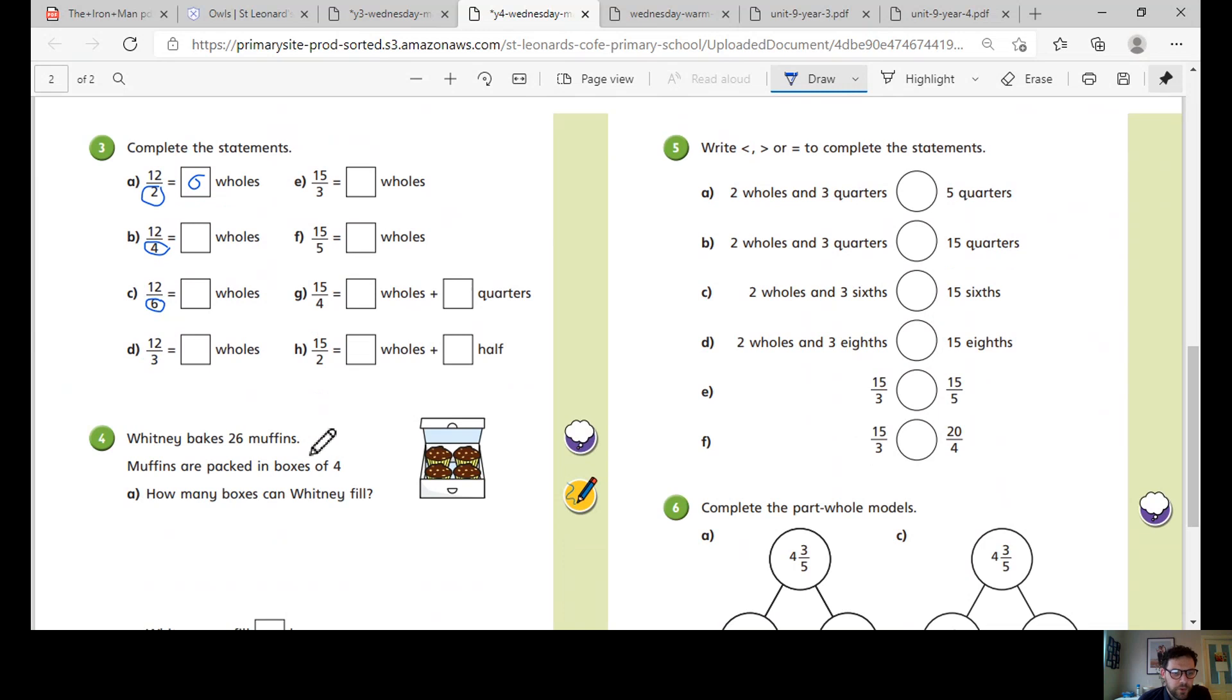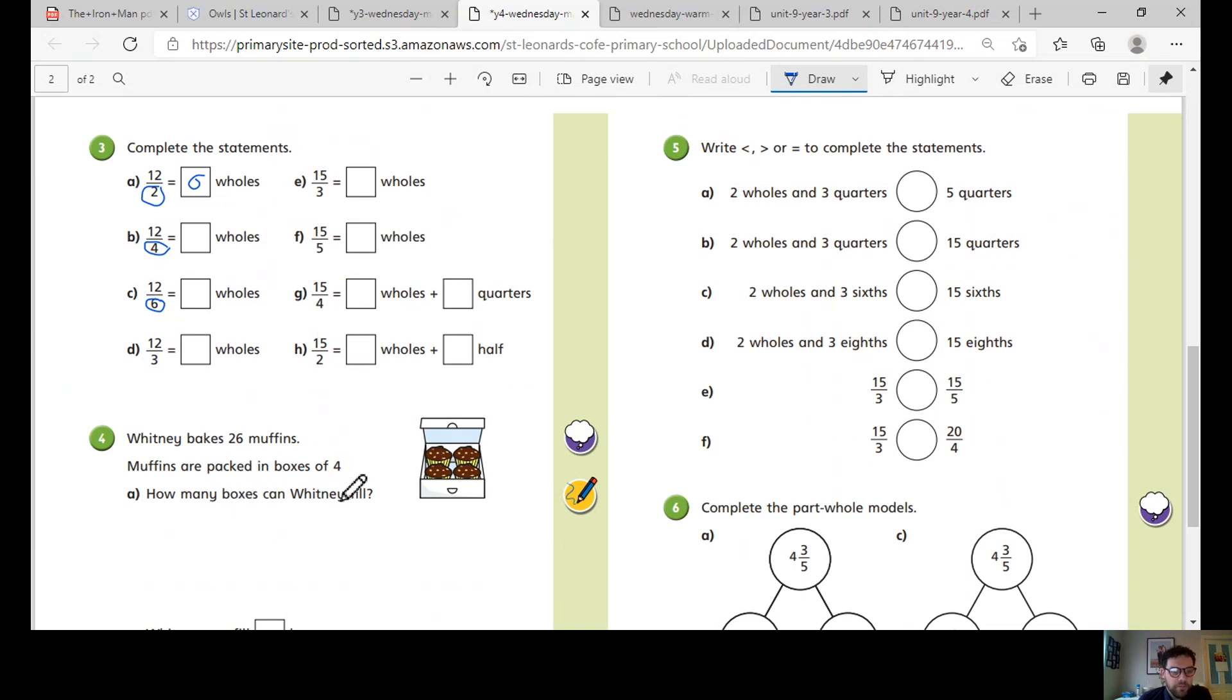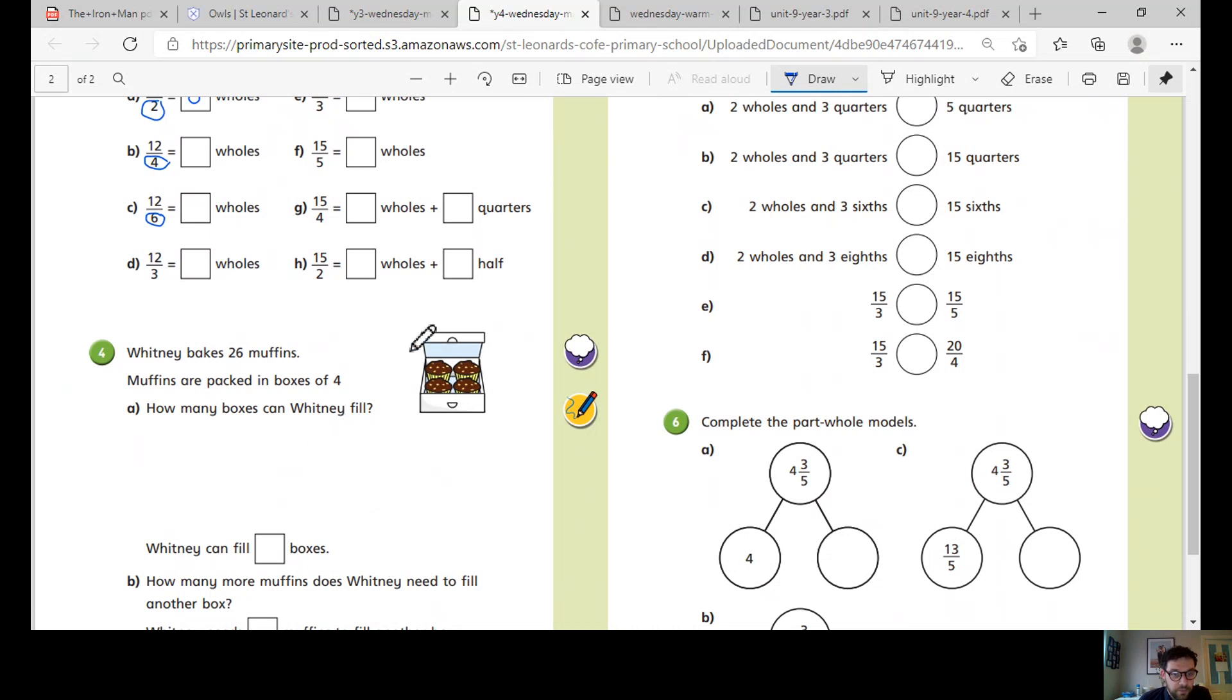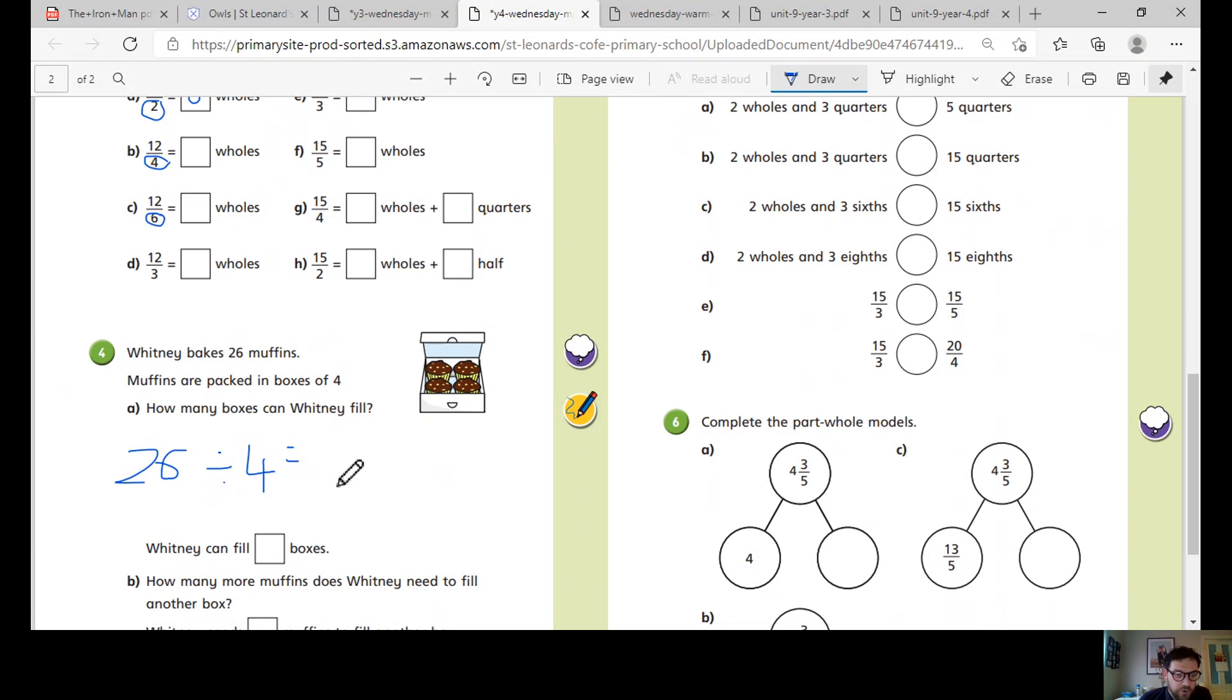Number four, Whitney makes 26 muffins. Muffins are packed in boxes of four. How many boxes can Whitney fill? So again, looking at how many whole boxes. 26 muffins, four in each box. Here is our calculation we need to do. Using your four times table.